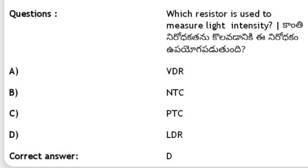Which resistor is used to measure light intensity? Options: VDR, NTC, PTC, LDR. The answer is D, LDR.